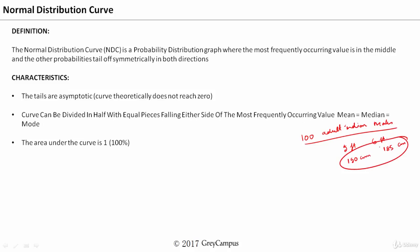How do you arrive at this — 150 and 185? It is based on the fact that over so many years, we have collected the data and found that there is a pattern. We find that there is a pattern in the height of Indian adult males, and whenever we take random samples, the range will always be within this.